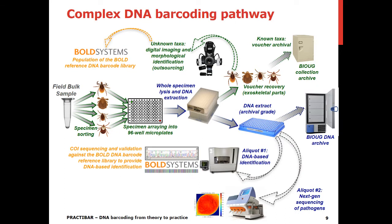I've been talking about standard barcoding workflows, but now I'll show an example of a complex barcoding pathway — this example is with ticks. Let's say you go out in the field and collect a bulk sample, then you need to sort the ticks, put them in a microplate, and send the samples to the lab directly without taking images. Because ticks are so small, the whole specimen will go through lysis and DNA extraction.